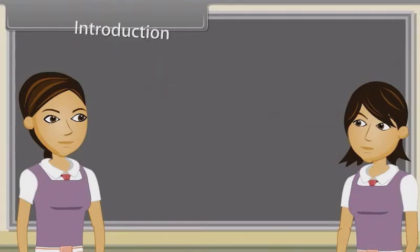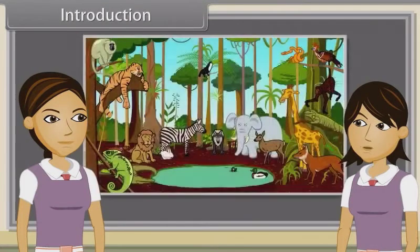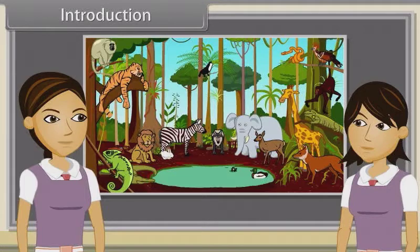Sharmila, in a few words define an animal. Animals are a major group of mostly multicellular, eukaryotic organisms of Kingdom Animalia or Metazoa.